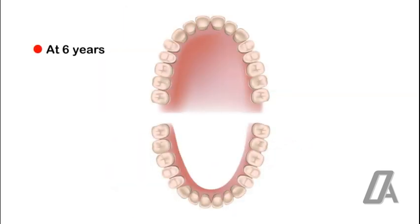At six years, which is the stage of eruption of permanent teeth, the common sequence of eruption is mandibular central incisors, mandibular first molars, and maxillary first molars.